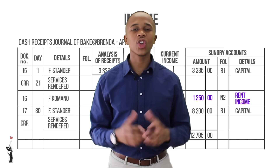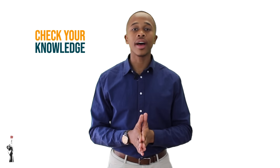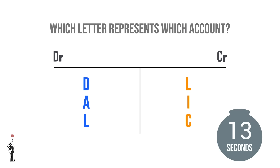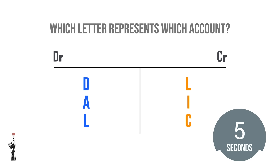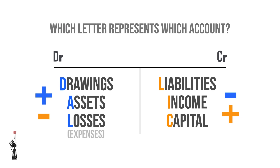As our last exercise, we'll be looking at DALIC — can you remember and identify which letter represents which account? Okay, time's up! In the next lesson we will be focusing on the CPJ and recording this on the general ledger.